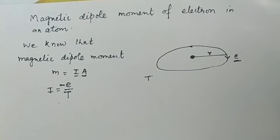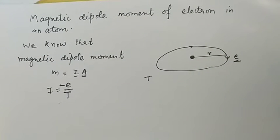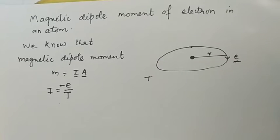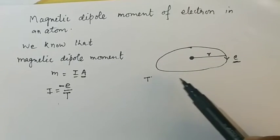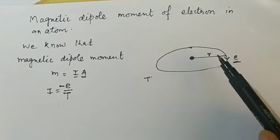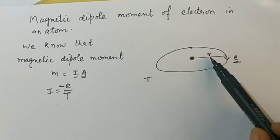In this video we will discuss the magnetic dipole moment of an electron in an atom. I consider this is a nucleus, and an electron is revolving around this nucleus in an orbit of radius small r.